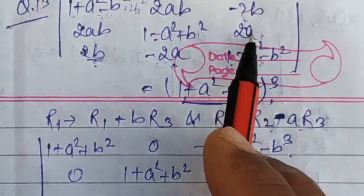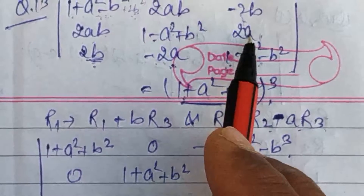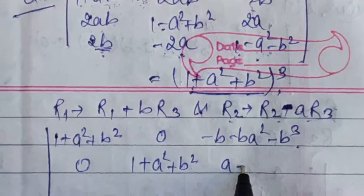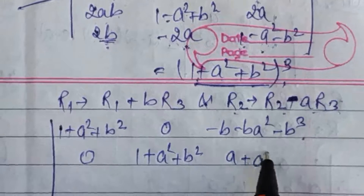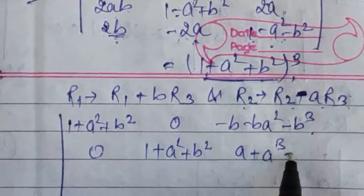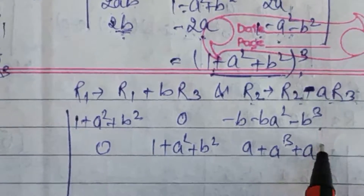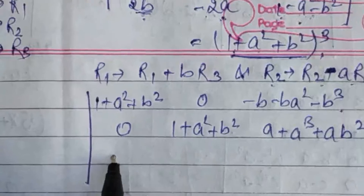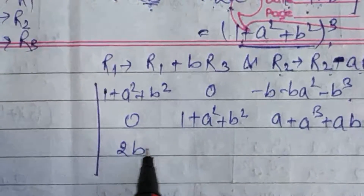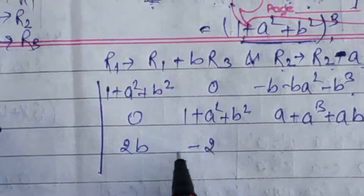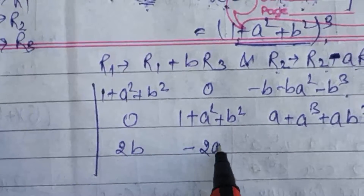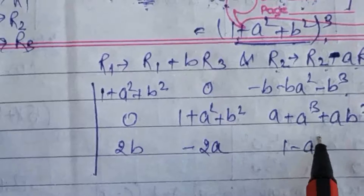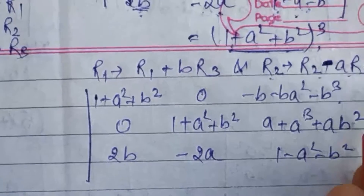a से multiply करके subtract कर रहा हूँ तो मिलता है a plus a cube plus a·b square। और third row same रहेगी: minus 2b, minus 2a, 1 minus a square minus b square।